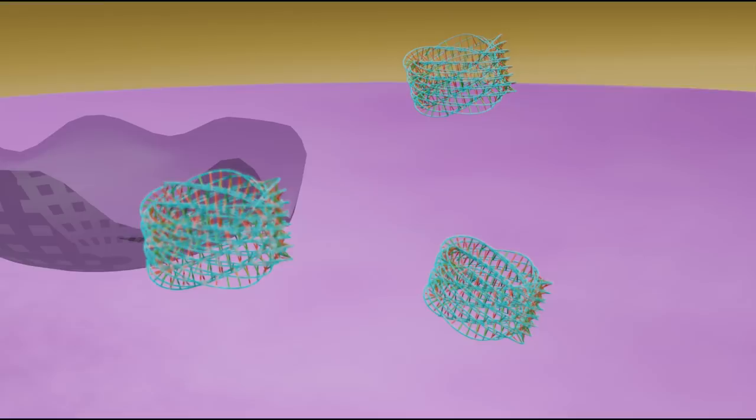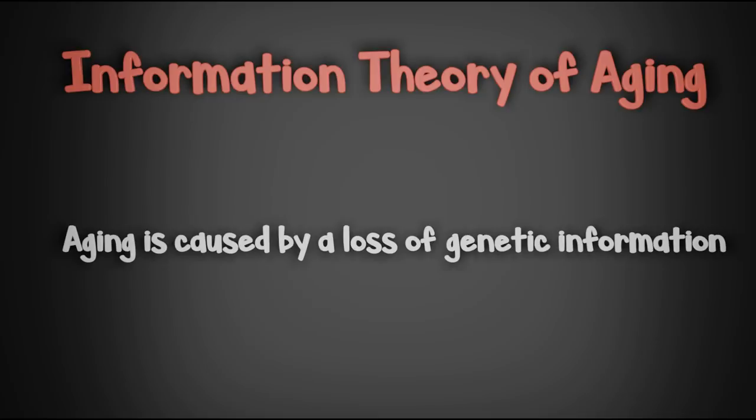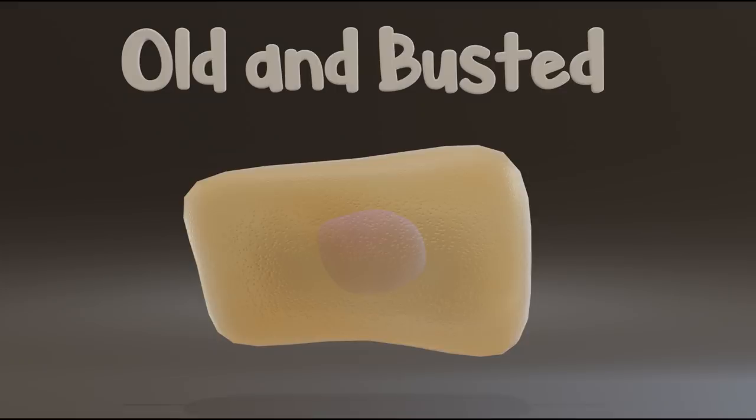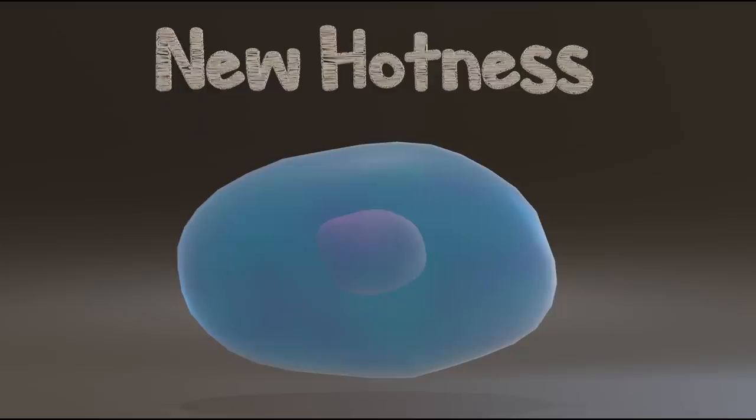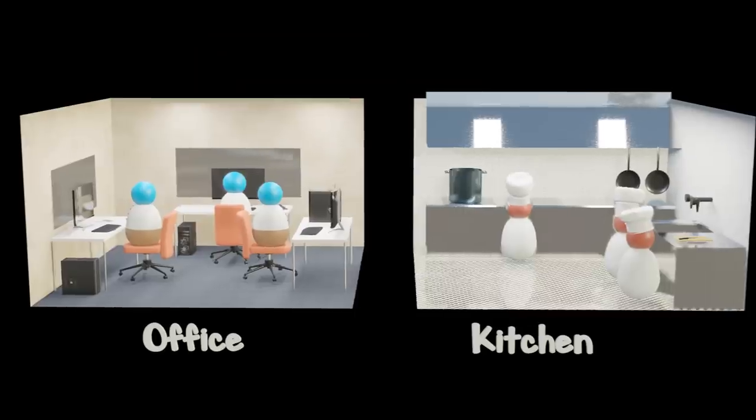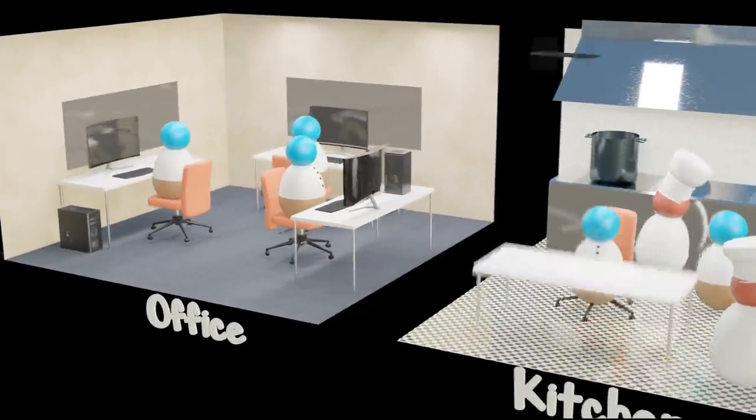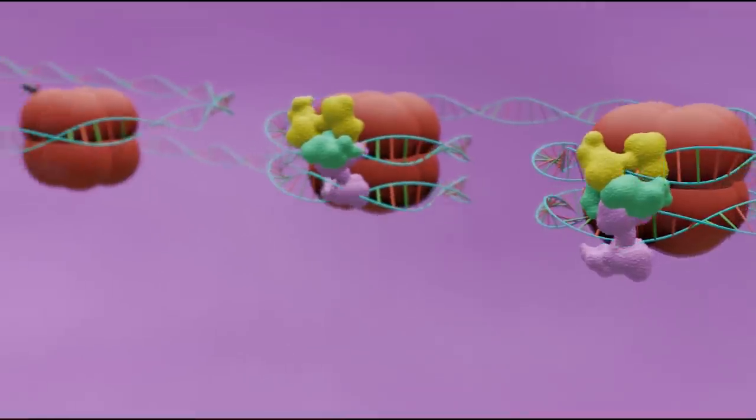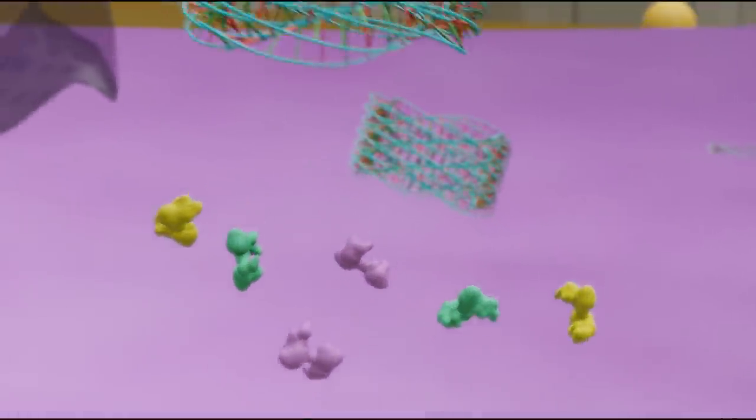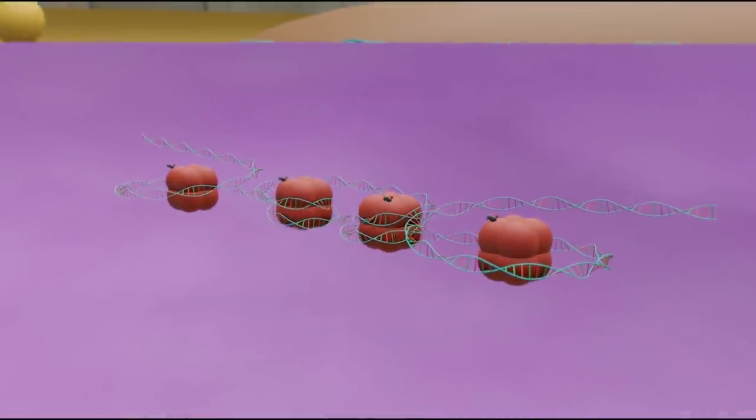It would seem that a yeast cell's ability to quickly fix its DNA correlated to longer and healthier lifespans. Now this does seem to mesh with the original theory of DNA damage being the cause of aging, but it still wouldn't explain how old DNA can become youthful again. And this is where our kitchen and office metaphor from before comes into play.